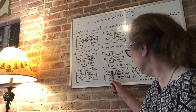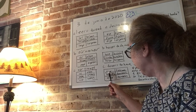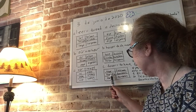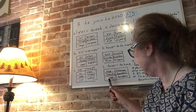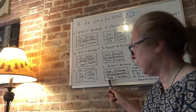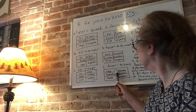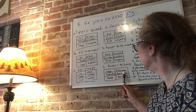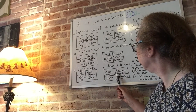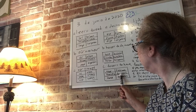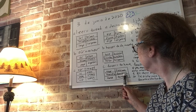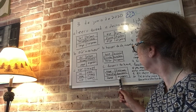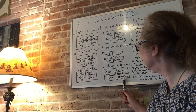Then we have tener. Yo tuve, T-U-V-E. Tú tuviste, T-U-V-I-S-T-E. Él, ella, usted tuvo, T-U-V-O. Nosotros y nosotras tuvimos, T-U-V-I-M-O-S. Vosotros y vosotras tuvisteis, T-U-V-I-S-T-E-I-S. Ellos, ellas, y ustedes tuvieron, T-U-V-I-E-R-O-N.